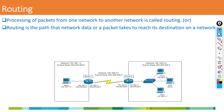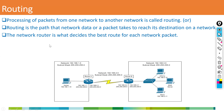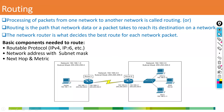Depending on the type of routing you are implementing, we have different types of routing. The router decides the best route for each network packet. Depending on what protocol you have implemented, every protocol uses its own metric to select the best path. Basic components needed to route: a routable protocol (IPv4 or IPv6), subnet mask, next hop, and metric.